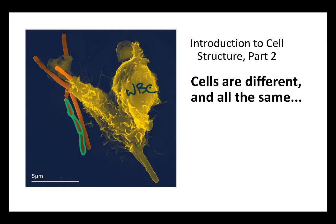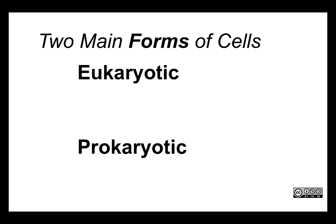There are two major forms of cells on this planet. Notice I'm trying to say forms rather than types, because inside our bodies we have thousands of different cell types. I'm talking planet-wide—there are two overarching forms of cells, and those are referred to as eukaryotic and prokaryotic.